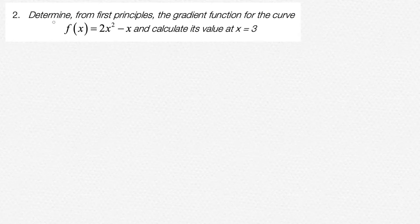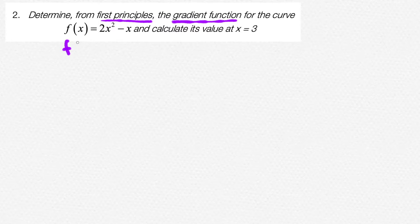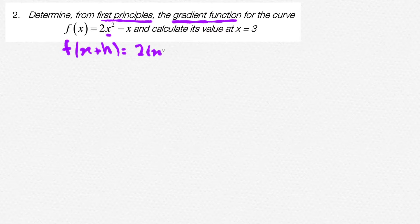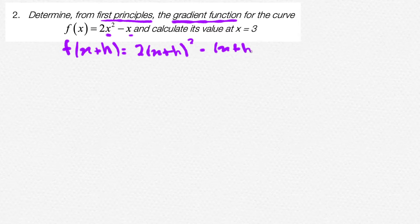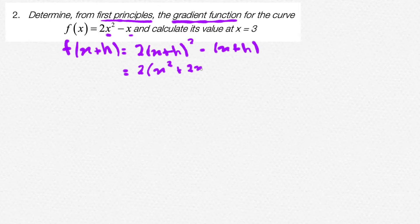Now let's move on to our next question. Determine from first principles the gradient function for the curve f of x is equal to 2x squared minus x, and calculate its value at x is equal to 3. Similarly, like before, let's find out f of x plus h by subbing in x plus h for the value of x. So this will be 2 into x plus h whole squared minus x plus h. Now let's simplify: x plus h whole squared expanded will be x squared plus 2xh plus h squared. Then minus times x will be minus x, and minus times h will be minus h.